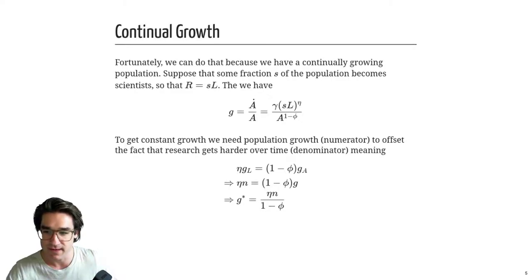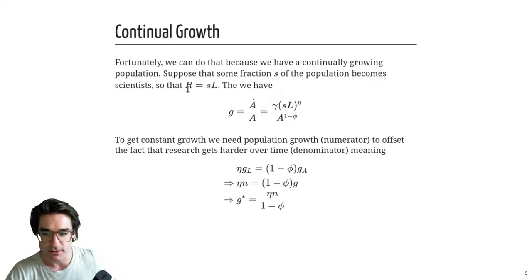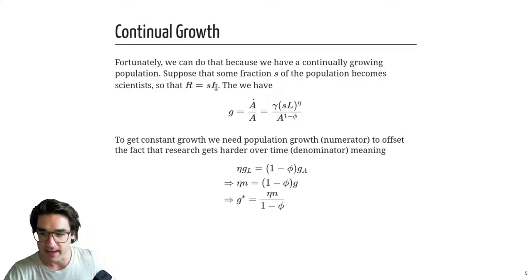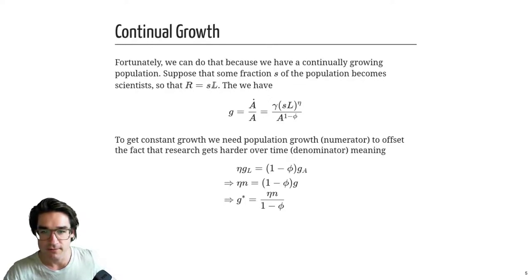Everyone else produces goods — it's still an investment-consumption tradeoff, just in terms of research and production. At any given time, maybe five percent (actually closer to two-and-a-half percent) of the population are researchers. Population is growing, though, so R = S·L, and since S is constant, if population grows at rate N, then R grows at the exact same rate N. Anytime two things are proportional, they have the same growth rate.